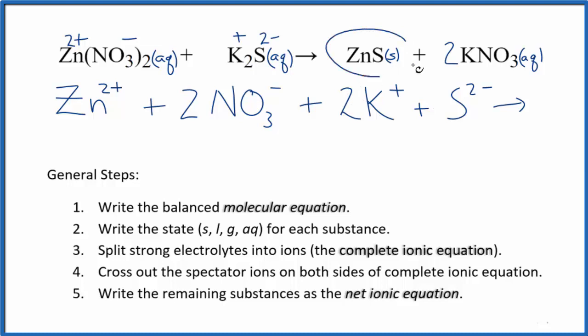For the products, we don't split solids apart in net ionic equations. So that's going to just be ZnS, and then we have positive and negative. So we have two potassium ions, just like in the reactants, and then two nitrate ions, also like the reactants. So this is the complete ionic equation.